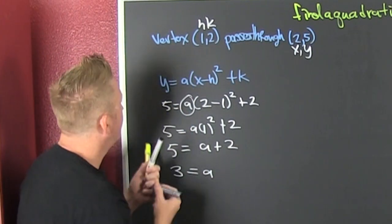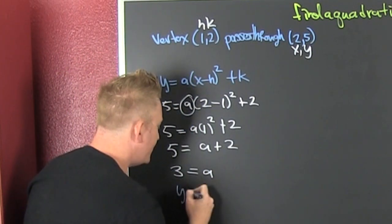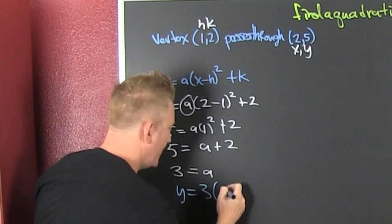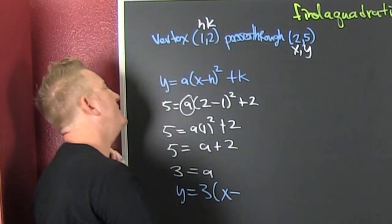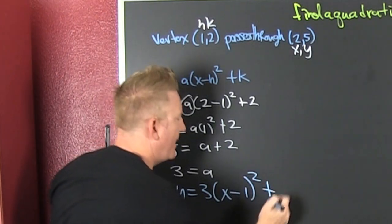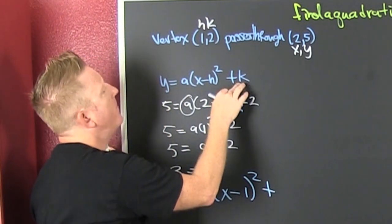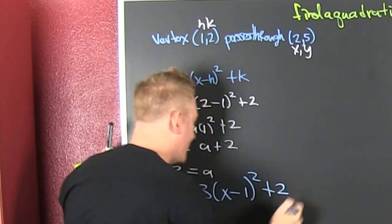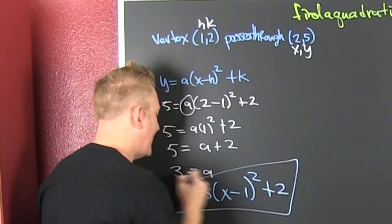So my function is Y is equal to a 3 times an X. What's my H? H is the X coordinate of my vertex. That's a 1 squared. And then I'm going to add it to my K. What's my K? The Y coordinate of my vertex. And then that's that.